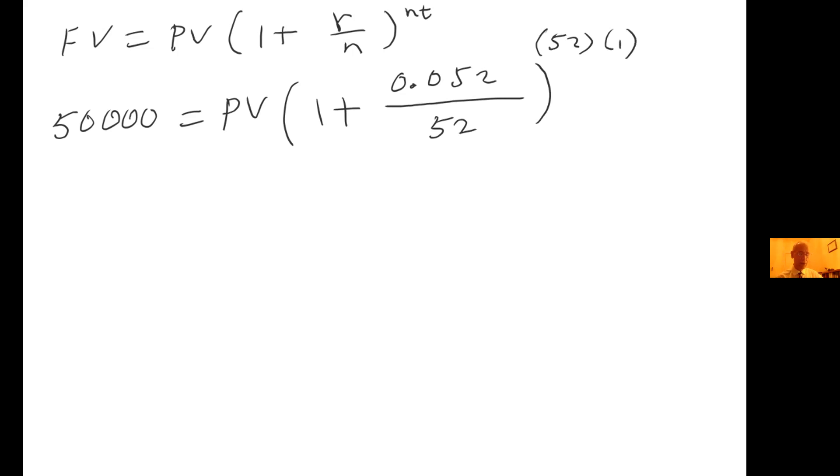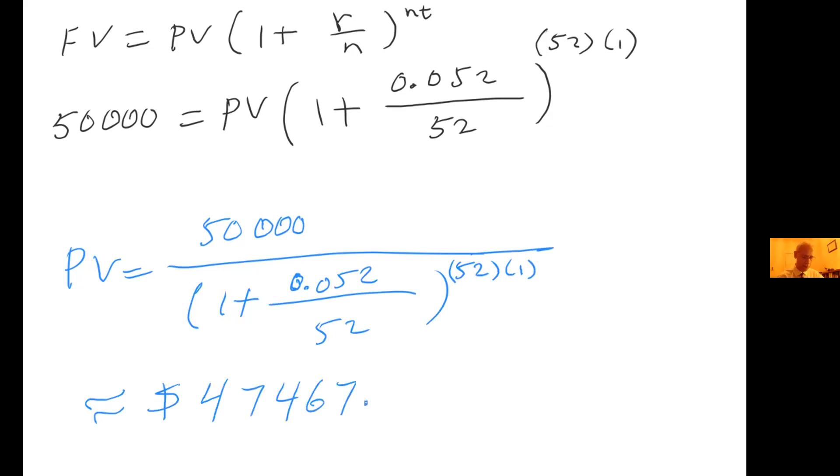Solve for present value. In other words, present value equals 50,000 divided by 1 plus 0.052 divided by 52 to the power of 52 times 1. I already have that figured out, and that is $47,467.68.